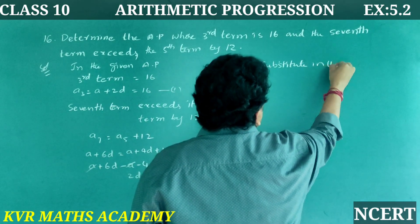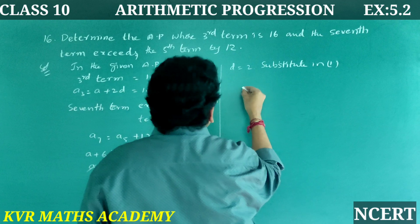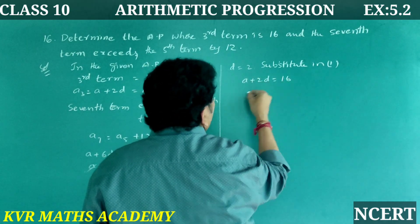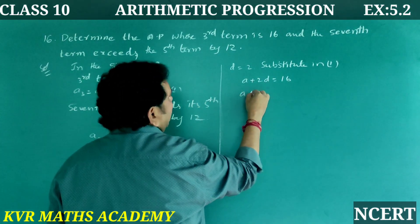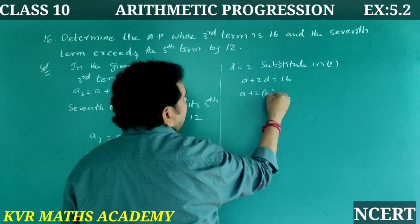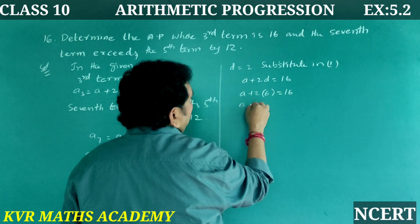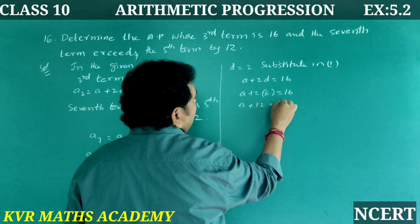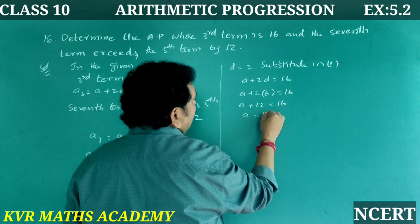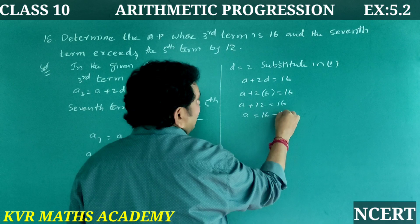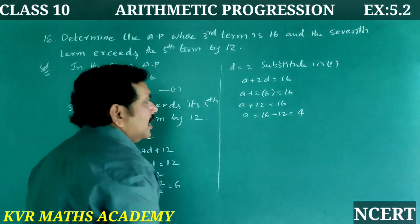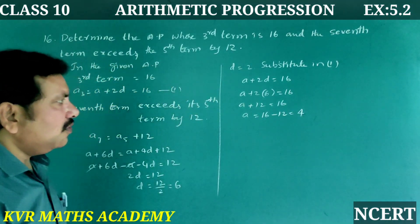Substituting d = 6 into equation 1: a + 2 × 6 = 16, so a + 12 = 16, giving a = 4.